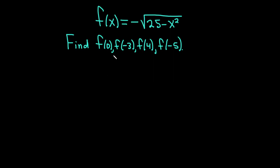Hello, in this video I'm going to show you how to evaluate a square root function. We have f of x equals minus the square root of 25 minus x squared. And we have to find f of 0, f of negative 3, f of 4, and f of negative 5. Let's carefully work through this solution.